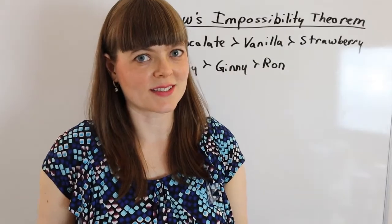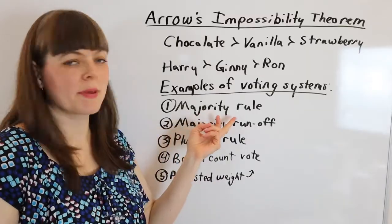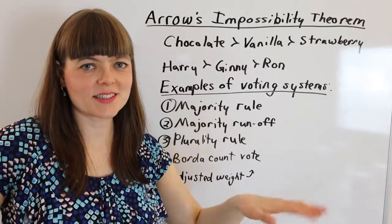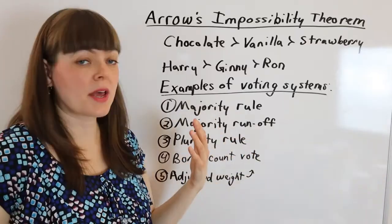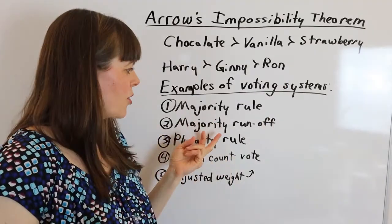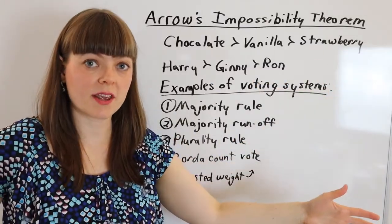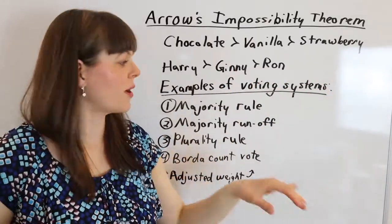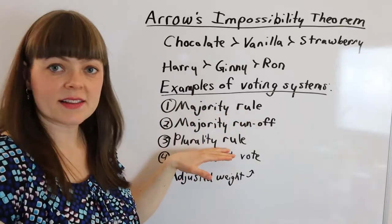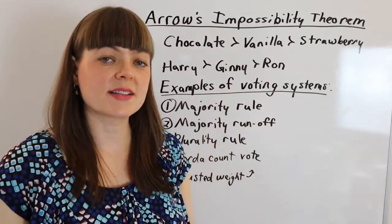So what are some examples of voting systems? People are used to majority rule, which might work well if there's only two candidates. But if there's three candidates, sometimes none of the three have a majority — all of them have below 50%. Majority runoff is a system where you first vote on everybody, and then you take the top two and run those off with a majority rule voting system. Then we have plurality rule, which is simply take one vote and whoever has the most votes wins, even if that number is below 50%.